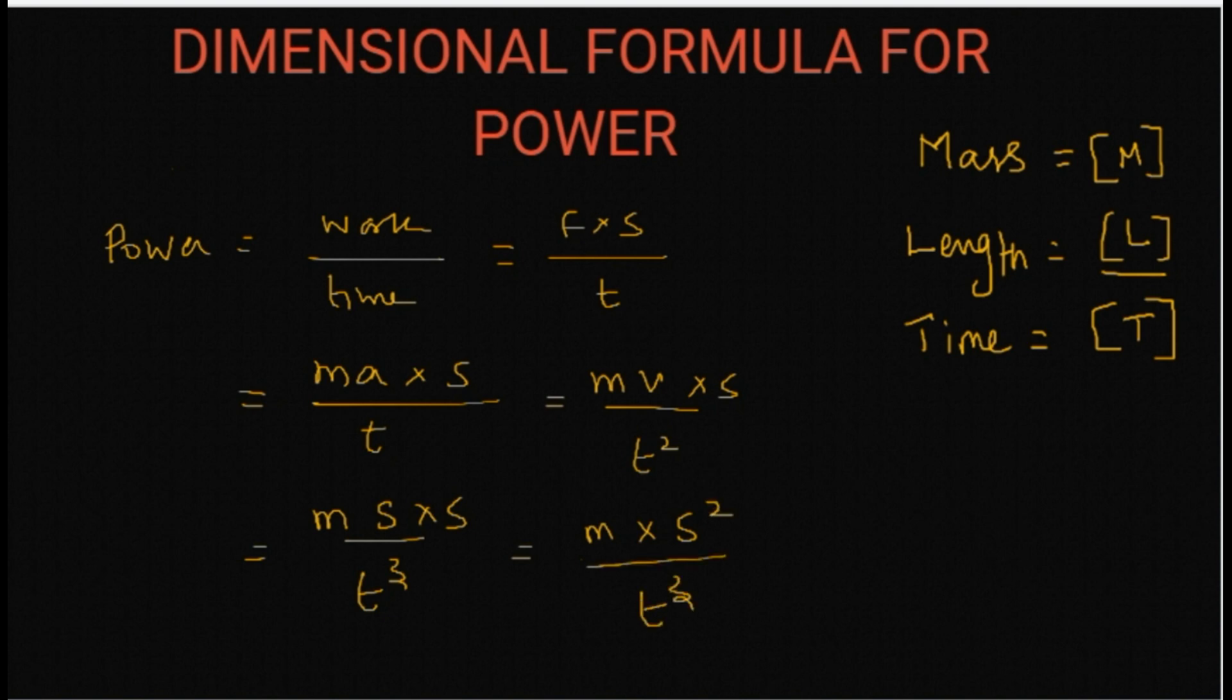So the dimensional formula for mass is capital M, and distance is L squared, and time to the power of three. So t power 3. If you bring this to the top, you can write it as M L squared T power minus 3. That is the dimensional formula for power.